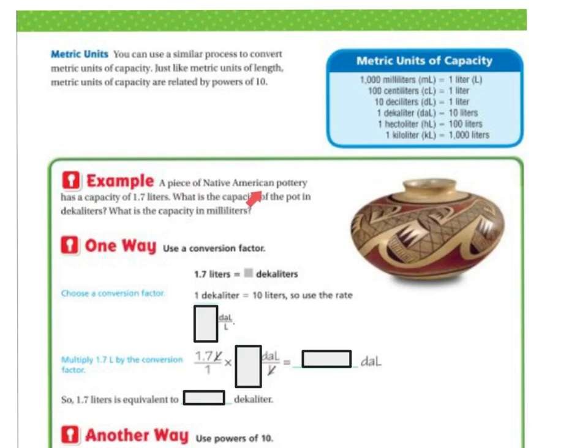Example: A piece of Native American pottery has a capacity of 1.7 liters. What is the capacity of the pot in deciliters? What is the capacity in milliliters? So use a conversion factor. We're going to choose the conversion factor 1 over 10. And you know that because here's my deciliter and there's my liters. It's 1 over 10.